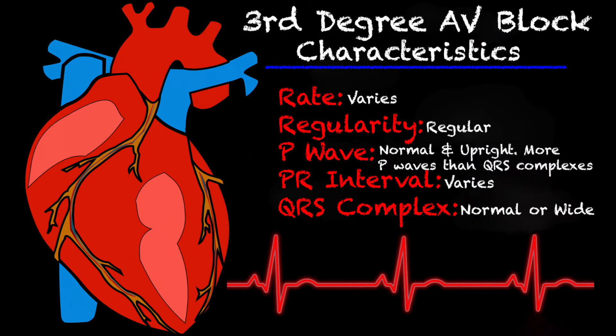Let's go into the checklist of our third degree AV block. Your rate is going to vary, and that's mainly going back to your AV disassociation. Your atrial rate will tend to be faster than your ventricular rate, and overall the rate that the monitor picks up tends to be fairly slow, between 20 and 40 or 40 and 60. Going into the regularity, it is regular.